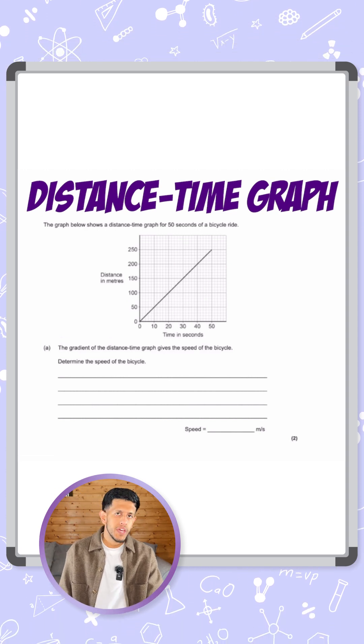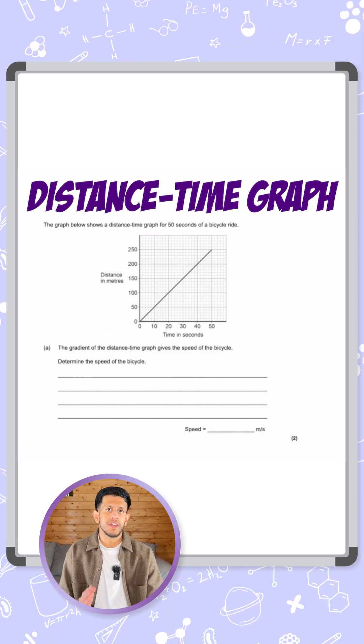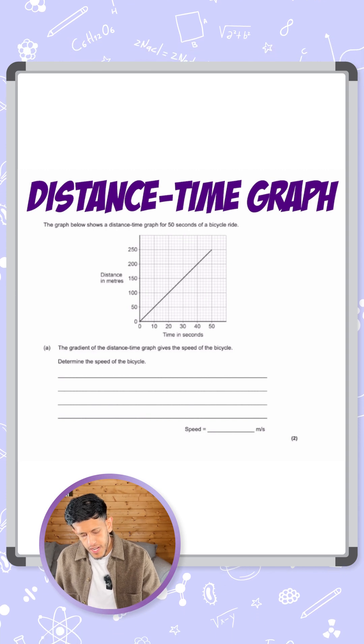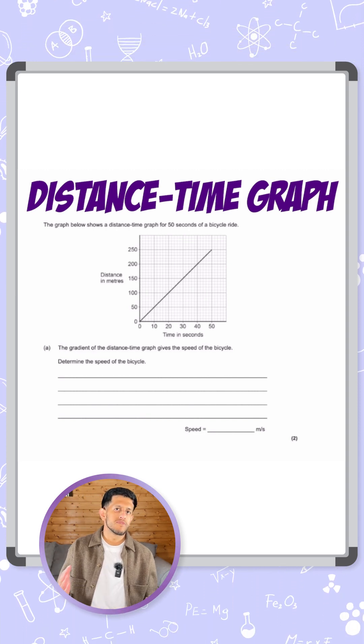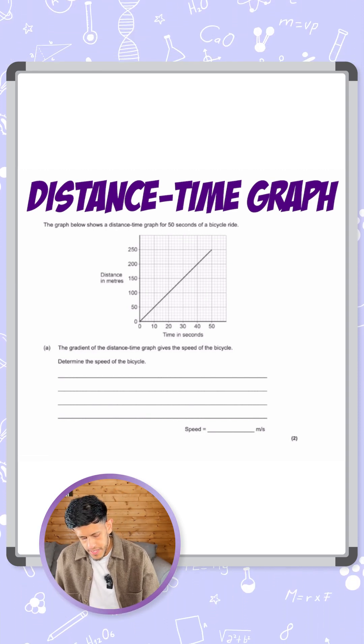What I like to do is show the points that I'm referring to when I calculate the gradient on my graph. And because it's a straight line graph, you want to use as much of that gradient as possible. So I'm going to use the entire thing.